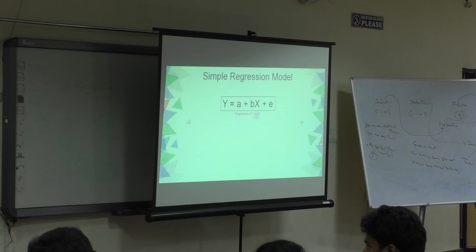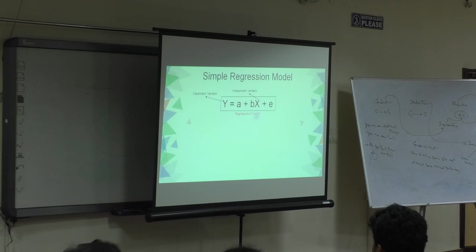Let's look at what each of these terms are. Dependent variable, this we already talked about. X would be the independent variable here. A is the intercept of the line.